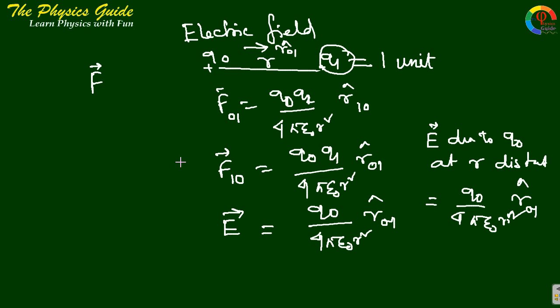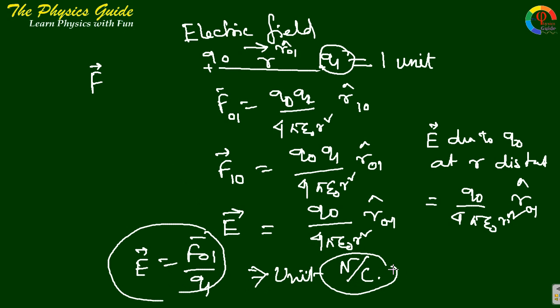Very simple. Obviously it can be said that E equals to F01 divided by charge Q1. So electric field is basically Coulomb force per unit charge. The unit should be Newton per Coulomb.